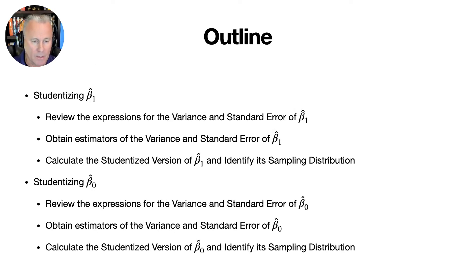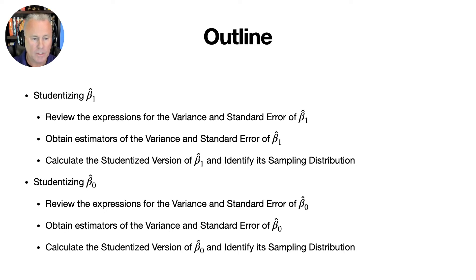So here's an outline of what we'll be looking at in this lecture. We'll first look at studentizing the least squares estimator beta 1 hat. We'll review the expressions for the variance and the standard error of beta 1 hat. We'll then obtain estimators of the variance and standard error of beta 1 hat, and then finally we'll calculate the studentized version of beta 1 hat using those estimators and identify its sampling distribution. We'll then do the same thing for beta 0 hat — reviewing the expressions, obtaining estimators, and calculating the studentized version.